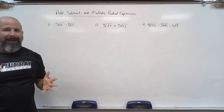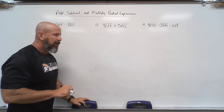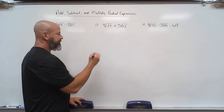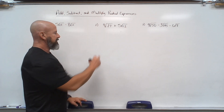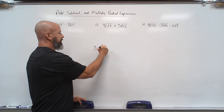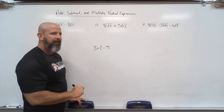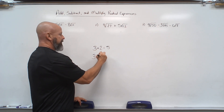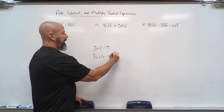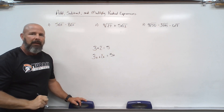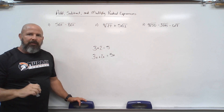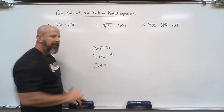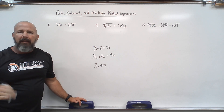What we need to remember when we add or subtract anything, we have to have like terms. Pretty basic stuff — 3 plus 2 is 5, and 3x plus 2x gives 5x. I've just got to have those like terms. If I had 3x plus 5, I can't do anything — they're not like terms.